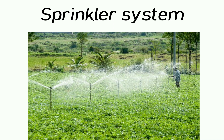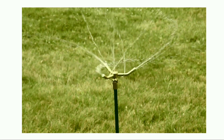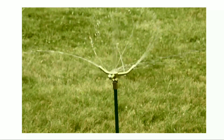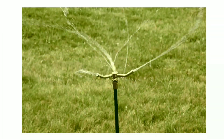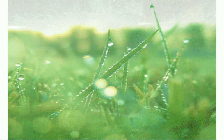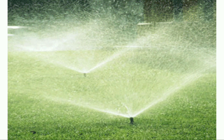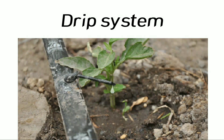The sprinkler irrigation system is more useful on uneven lands where sufficient water is not available. There are perpendicular pipes having rotating nozzles on top, which are joined to the main pipeline. When water is allowed to flow through the main pipe, it escapes from the rotating nozzles and gets sprinkled on the crop, as if it is raining.